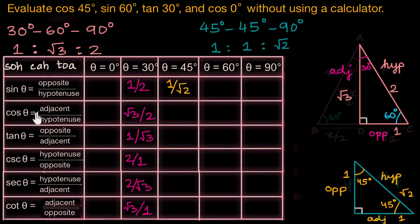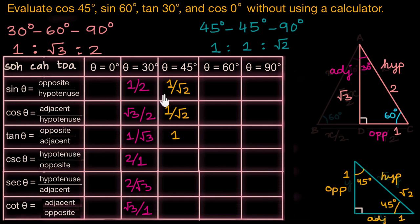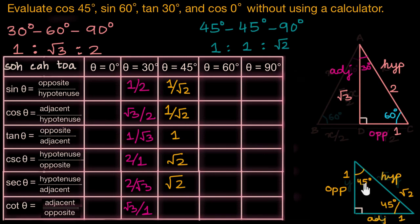Similarly, cos theta is adjacent over hypotenuse. If the adjacent is 1 unit and the hypotenuse is √2 units, cos 45 degrees is also 1/√2. Tan theta is opposite over adjacent — since these two side lengths are equal, the ratio is 1. Cosecant theta is the reciprocal of sine theta, which is √2. Secant theta is the reciprocal of cosine theta, which is also √2. And cotangent theta is adjacent over opposite, which is again 1.